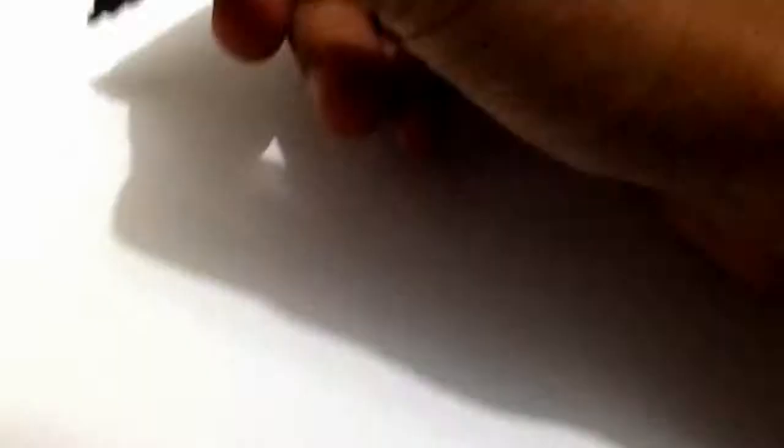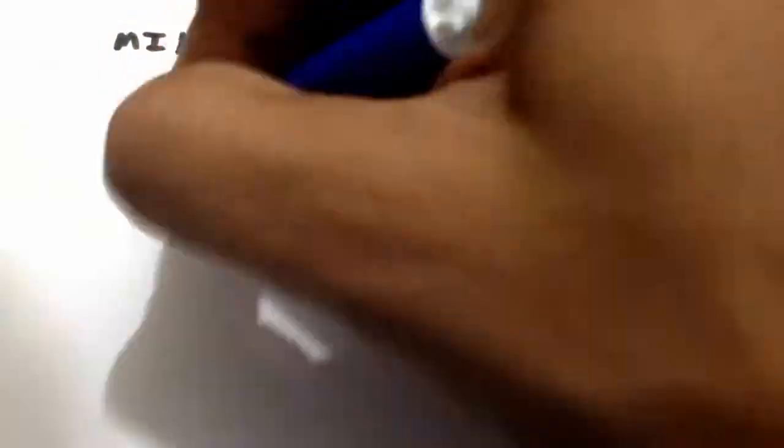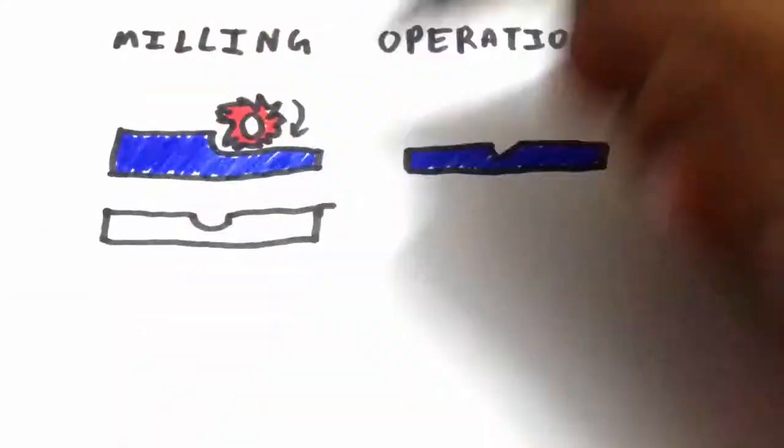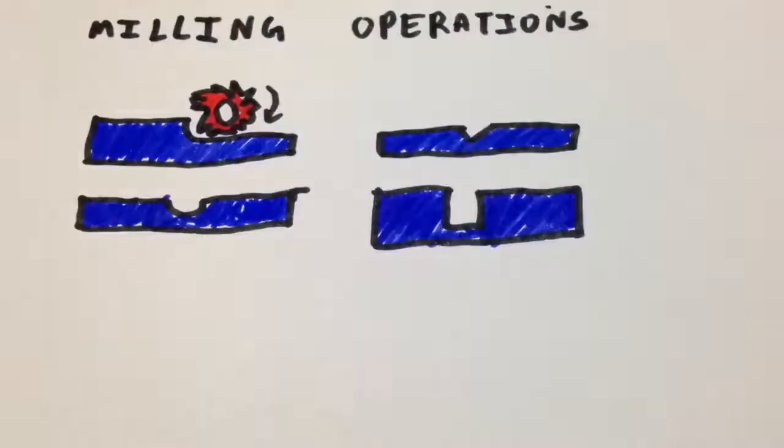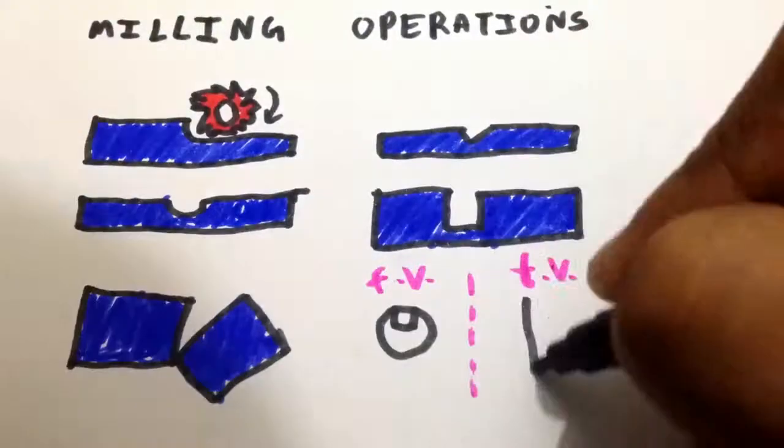A milling machine can carry out a lot of operations including plane milling, angular milling, form milling, slot or groove milling, saw milling or slitting and keyway milling.